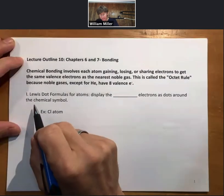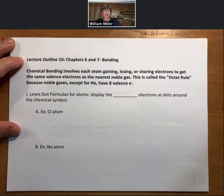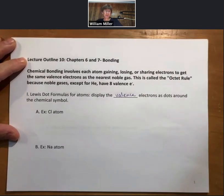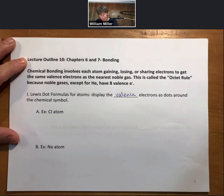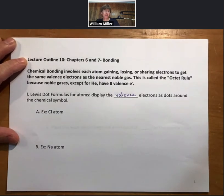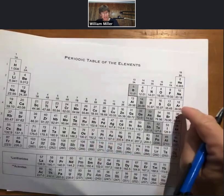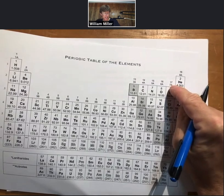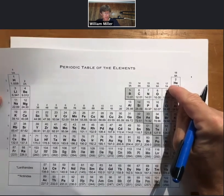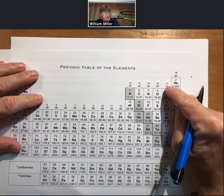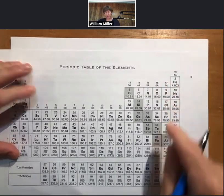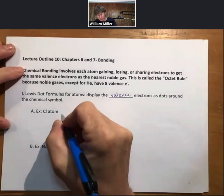Before we talk about bonding, let's talk about something called a Lewis dot formula for atoms. They display the valence electrons as dots around the chemical symbol. Let's do two examples. One is the chlorine atom with 17 electrons. It's in group 7, or group 17.